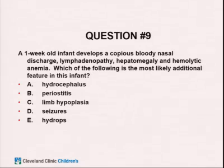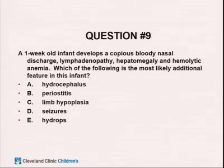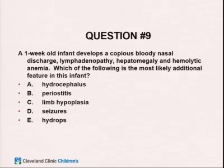Last two questions. A one-week-old baby develops copious bloody nasal discharge, lymphadenopathy, hepatomegaly, and hemolytic anemia. Which is the most likely additional feature? This is congenital syphilis, and the right answer is periostitis. Bony lesions are very common with congenital syphilis — more common than the other listed findings. About 30–40% of fetuses are stillborn; of live-born babies, about 70% are asymptomatic at birth and identified only through prenatal maternal screening.